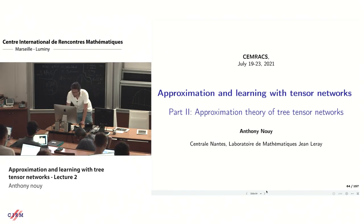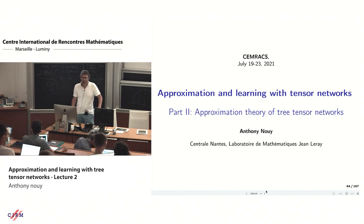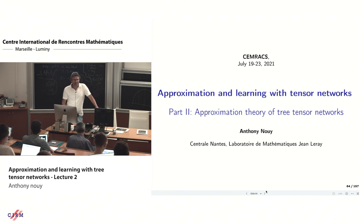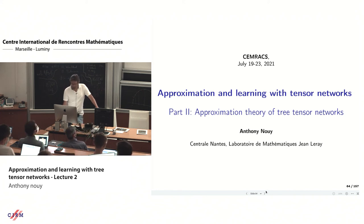I have essentially described what tensor networks are, what objects they represent, what the complexity of their representations is, and how we represent them graphically. The question now is: what do we do with this? In this part I will show you how to use them for approximation of functions and what we know about their properties.